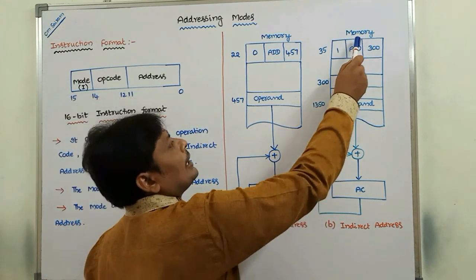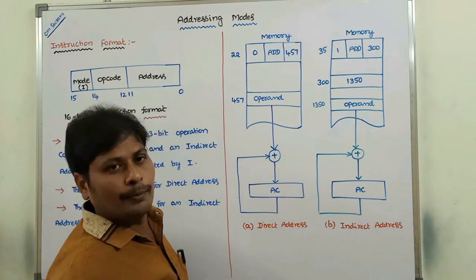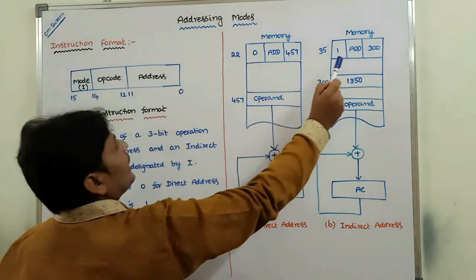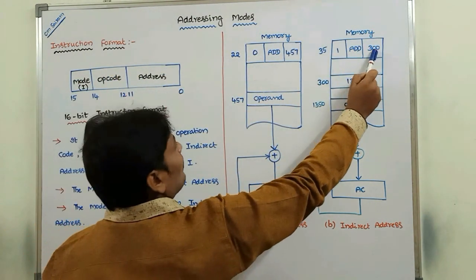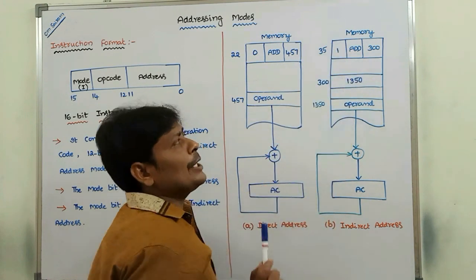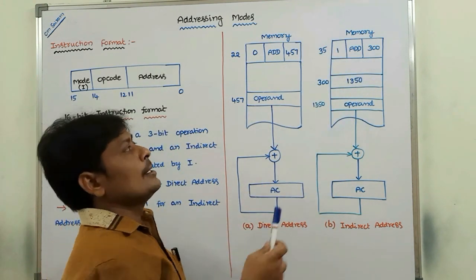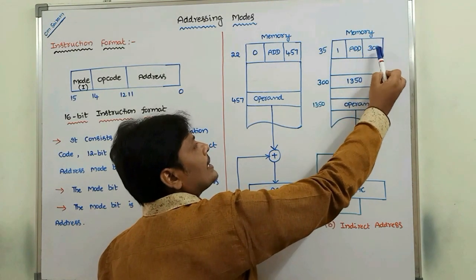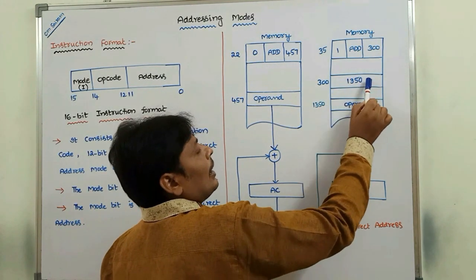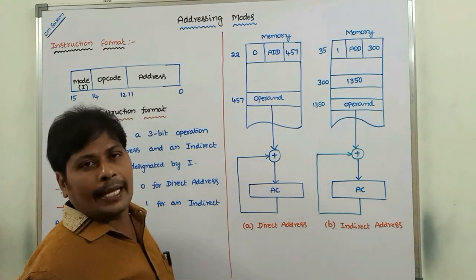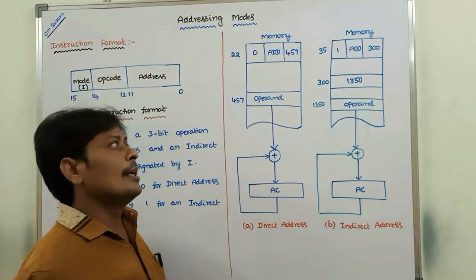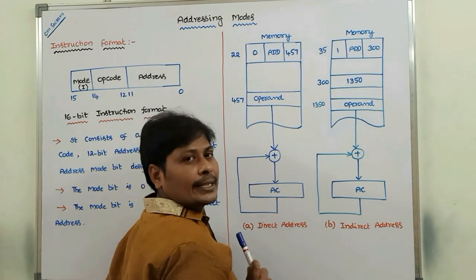Next is indirect addressing. This is an indirect address instruction because the mode bit value is equal to 1. The opcode is ADD and the address part of the instruction contains address 300. When mode bit equals 1, we first go to address 300 in memory. In that address, the address of the operand is stored. We then go to that second address to get the actual operand.